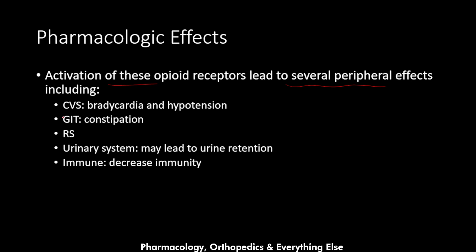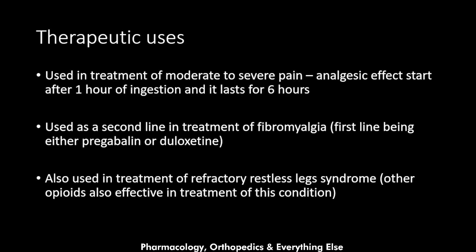Activation of opioid receptors also causes several peripheral effects: cardiovascular effects include bradycardia and hypotension; GIT effects include constipation; respiratory effects include bronchoconstriction; urinary effects include urinary retention due to increased bladder tone and urethral sphincter tone; and immune effects include decreased immunity from inhibition of lymphocytes.